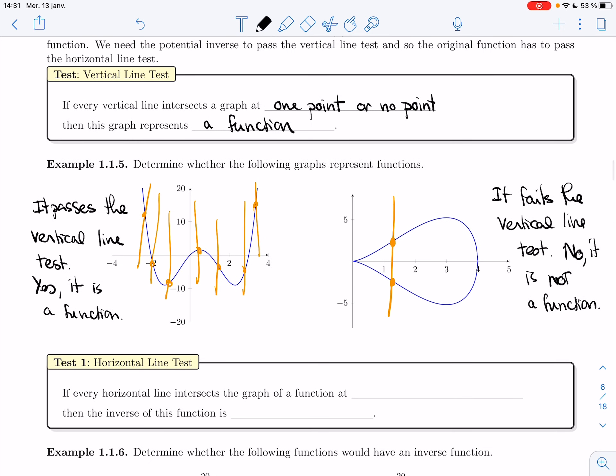To test whether something is a function, you use the vertical line test. To test whether a function has a function for an inverse, then you use the horizontal line test. If every horizontal line intersects the graph of a function at one point or no points, then the inverse of this function is a function.